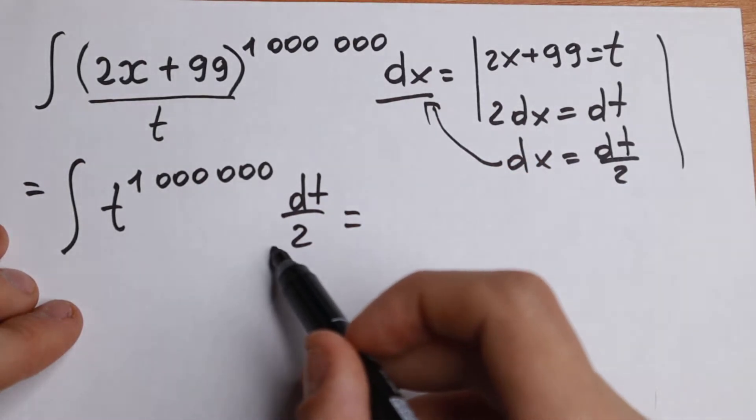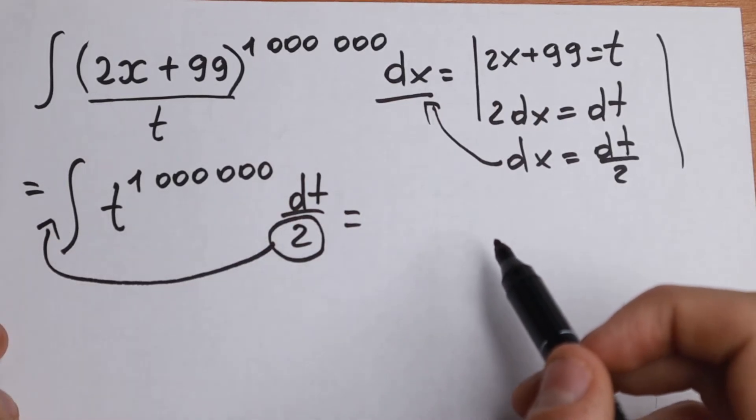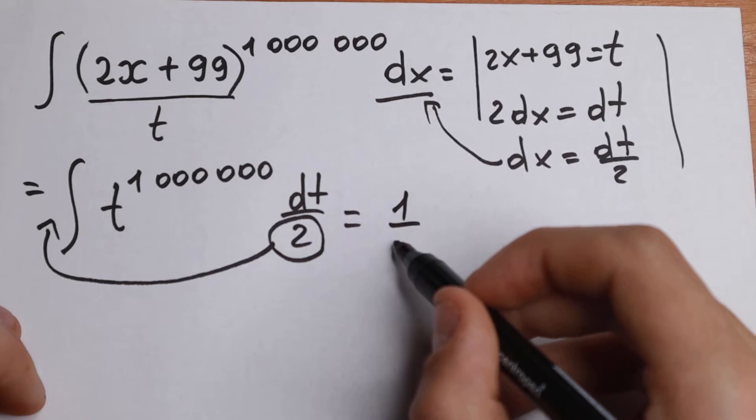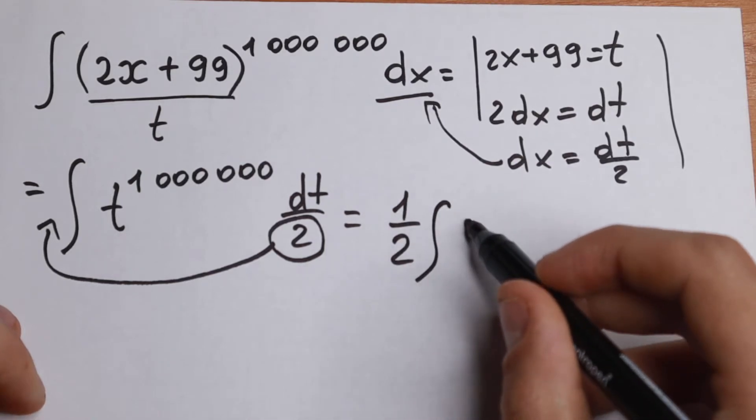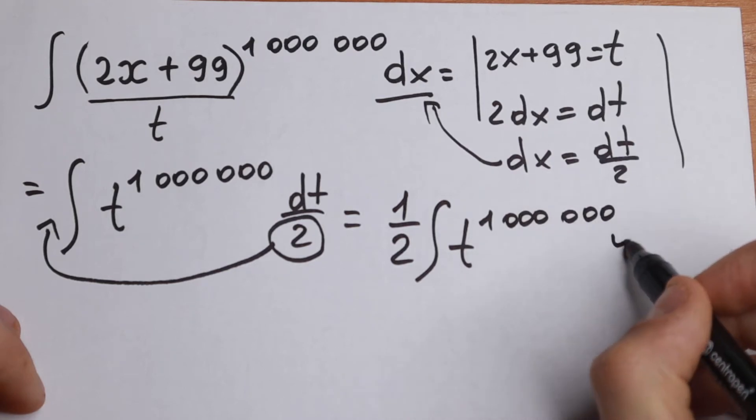How can we simplify this integral? First of all, we see 2 right here, so we can factor out this 2 behind this integral because this is a constant. So we have 1 over 2, integral of t to the power of 1,000,000 dt. And this is our table case.